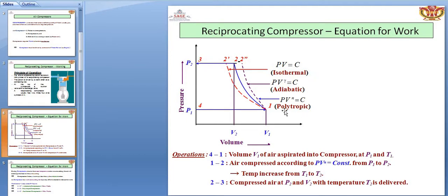Polytropic is the actual case of compression — this is where the air is actually compressed. The work done required for the polytropic process is in between that of isothermal and adiabatic. The 4-to-1 process is the volume of air aspirated into the compressor at pressure P1 and temperature T1. One to two is the air compressed according to PV to the power N equal to constant, where N is the polytropic constant. Two to three is the compressed air at P2 and V2 with temperature T2 being delivered.